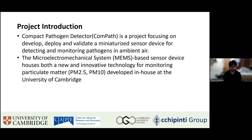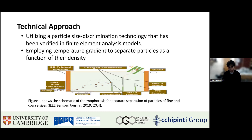The compact pathogen detector is a project focusing on developing, deploying, and validating a miniaturized sensor device for detecting and monitoring pathogens in ambient air. The MEMS-based sensor device houses both a new and innovative technology for monitoring particulate matter of sizes less than 2.5 microns and 10 microns, developed in-house at the University of Cambridge. For the technical approach — the particulate matter sensing — we utilized particle size discrimination technology verified by finite element analysis models. We employed a temperature gradient to separate particles as a function of their density, separating smaller particles from bigger ones.